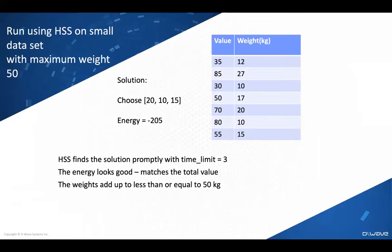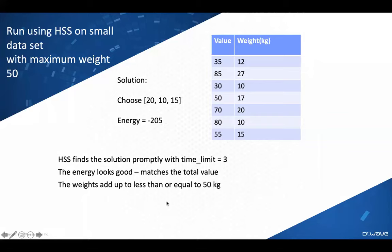We run this on a small set of objects — the weights and values are shown in the table. When we run it, the solver chooses three of them: weight 20, 10, and 15. The maximum weight was set to 50, and the total weight of the selected items is less than 50 — so the solution works. The energy comes back as minus 205, and as a check: 70 plus 80 plus 55 equals 205. HSS did its job quickly.